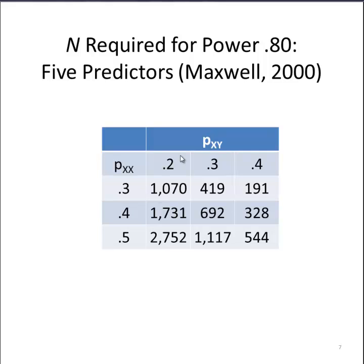I would say this is a very typical multiple regression analysis in practice. Somebody's got 5 independent variables, correlations roughly in the 0.3 area, and correlations with the dependent variable of about 0.2. So a lot of people would need a sample size of 1000, and the vast majority of people will never get that. Now if the correlation between the independent variables and the dependent variable is much larger at 0.4, then your sample size is down to 191.